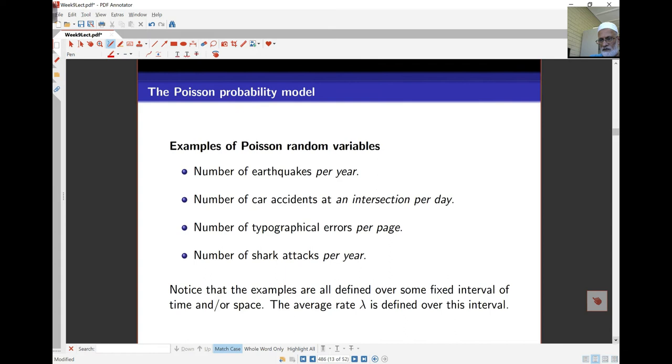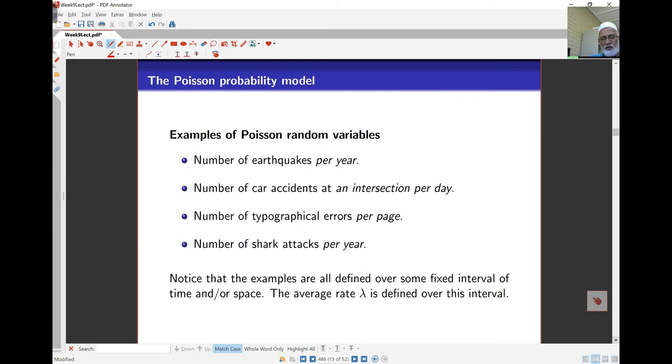As we saw earlier, the random variable, Poisson random variable, will model count data. So things like, for example, the number of earthquakes in a year, number of car accidents at an intersection per day. So there's some idea of volume here. In this case, it's per year. This is per day. Number of typographical errors per page. Number of shark attacks per year. So it's going to be over some value here. And it's over that volume that we're taking a look at the average rate as being fixed for the volume.